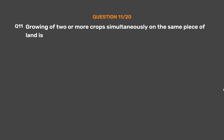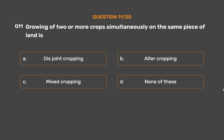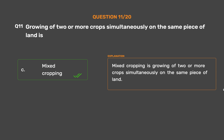Question No. 11. Growing two or more crops simultaneously on the same piece of land is — Option A: Disjoint cropping. Option B: Alter cropping. Option C: Mixed cropping. Option D: None of these. The correct answer is Option C: Mixed cropping. Mixed cropping is growing two or more crops simultaneously on the same piece of land.